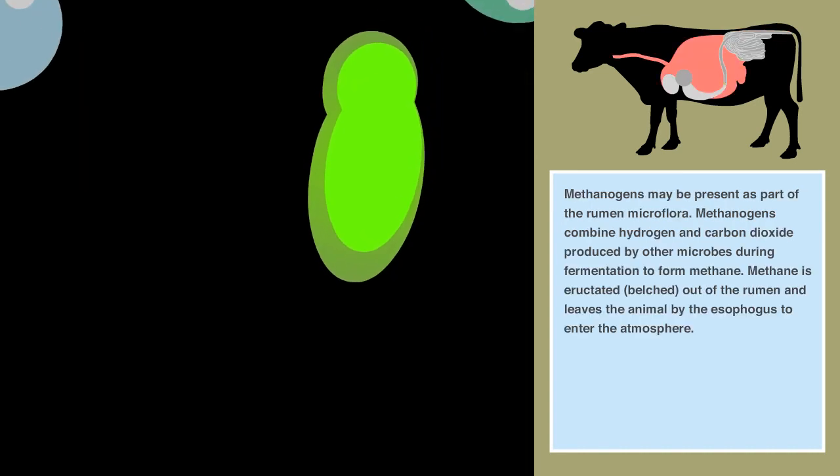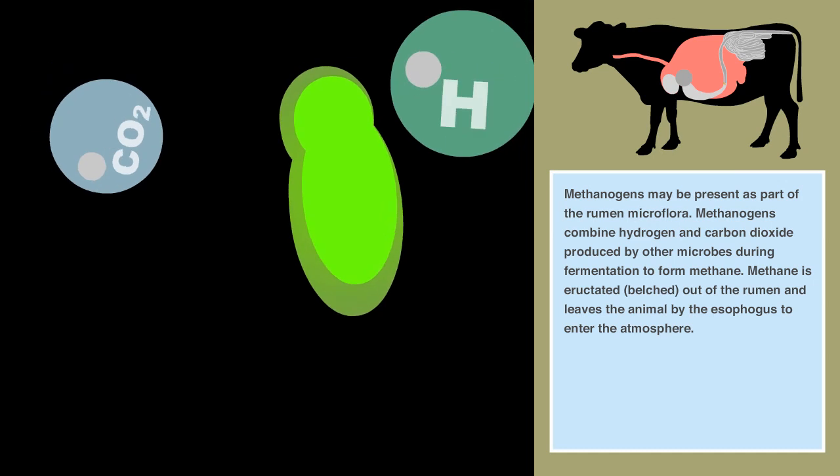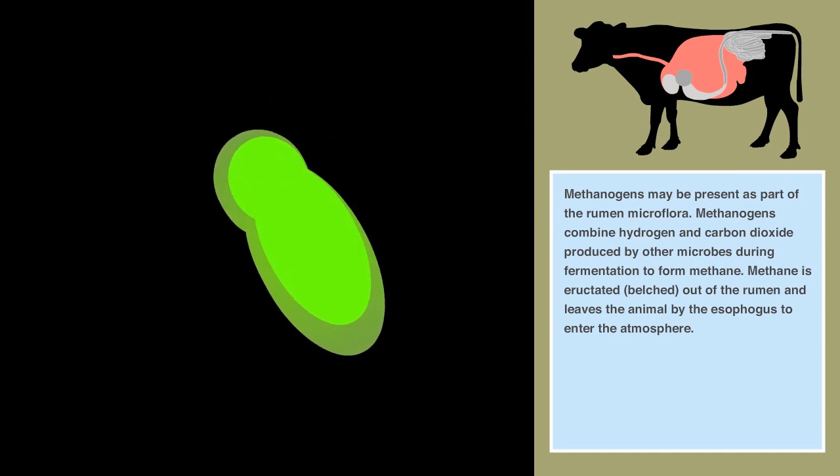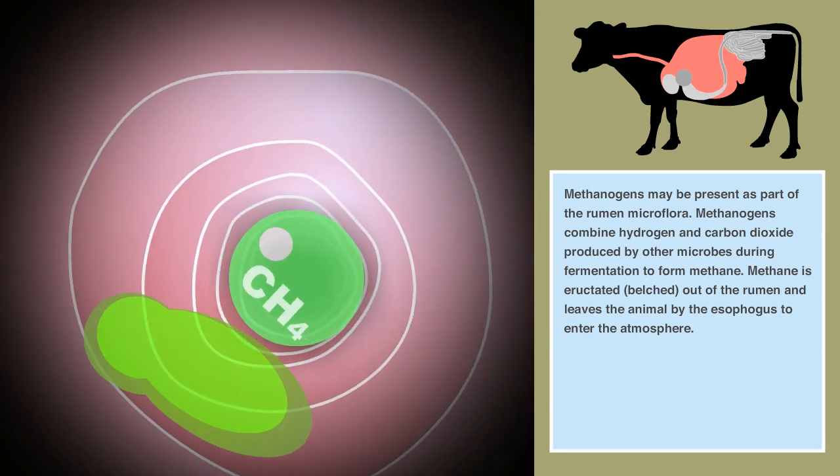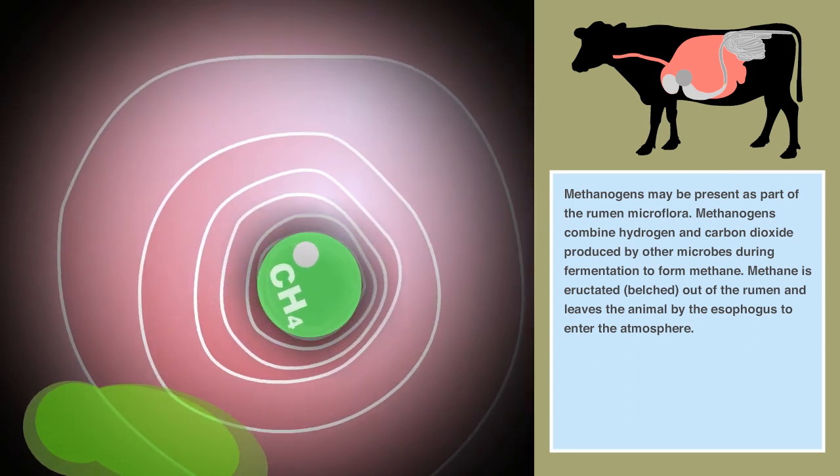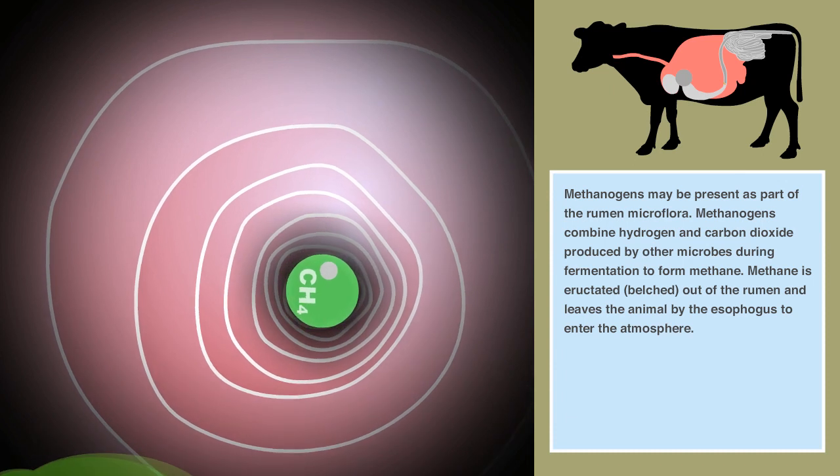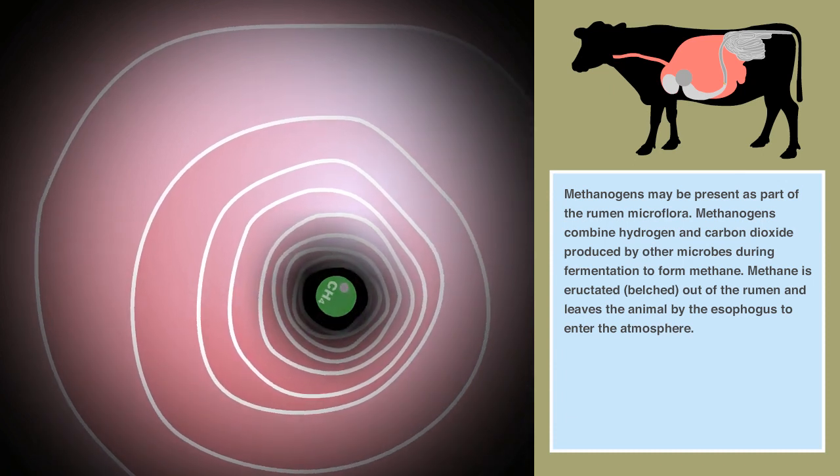Methanogens may be present as part of the rumen microflora. Methanogens combine hydrogen and carbon dioxide produced by other microbes during fermentation to form methane. Methane is eructated or belched out of the rumen and leaves the animal by the esophagus to enter the atmosphere.